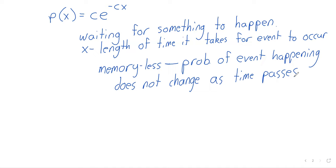Memory-less means that the probability of the event happening does not change as time passes. The classic example people give — which anyone who goes fishing knows is kind of false — is fishing. As the sun goes up and down that affects the fish, but the fish don't care that you've been fishing for an hour; they either bite or they don't. Another classic example is hitchhiking: the truck driver doesn't know whether you've been there for an hour or ten hours.